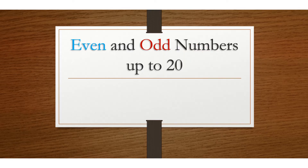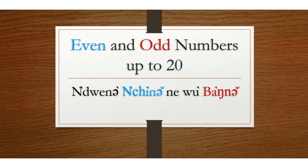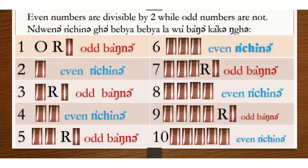Even and odd numbers up to 20. Even numbers are divisible by 2, while odd numbers are not.